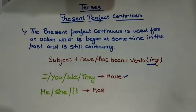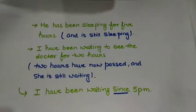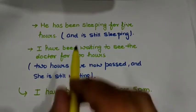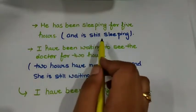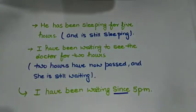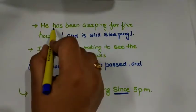The first example is: 'He has been sleeping for five hours.' The action of sleeping already started in the past and he is still sleeping. The action began at some time in the past and it is still continuing, so we use 'has been' here — 'has' because the subject is 'he.'